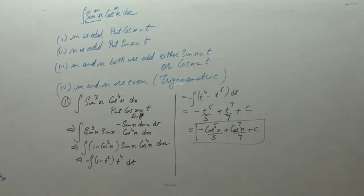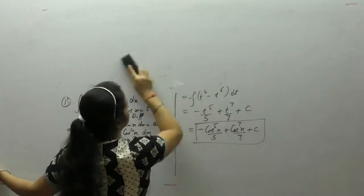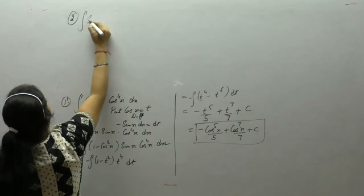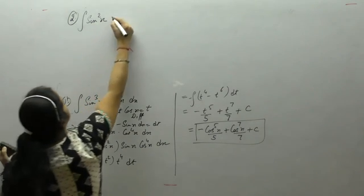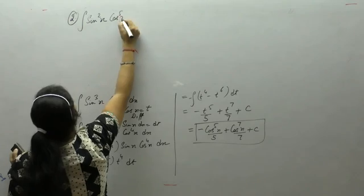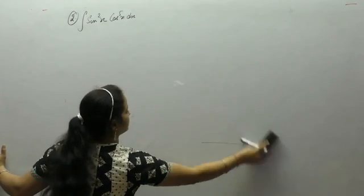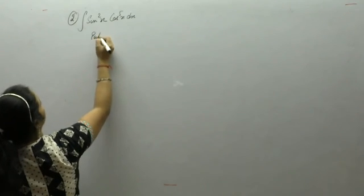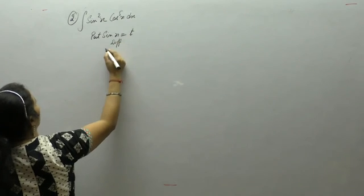Next is the integral of sin²x · cos⁵x dx. Here n is odd (5 is odd), so we put sin x as t. The derivative of sin x is cos x dx, which becomes dt.